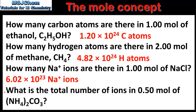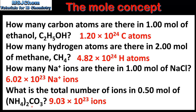And the last question is: what is the total number of ions in 0.5 moles of ammonium carbonate? The answer is 9.03 x 10 to the 23 ions. In one formula unit of ammonium carbonate we have 1 carbonate ion and 2 ammonium ions, so we multiply 0.5 by 3 and then by the Avogadro constant.